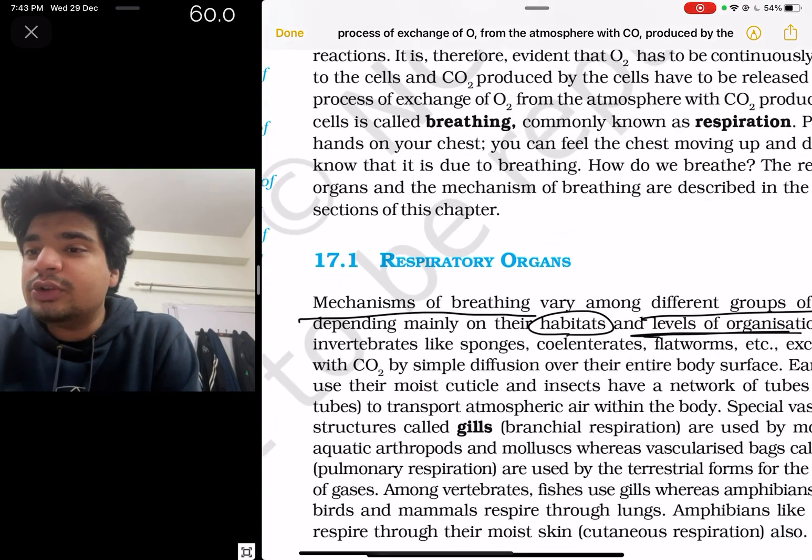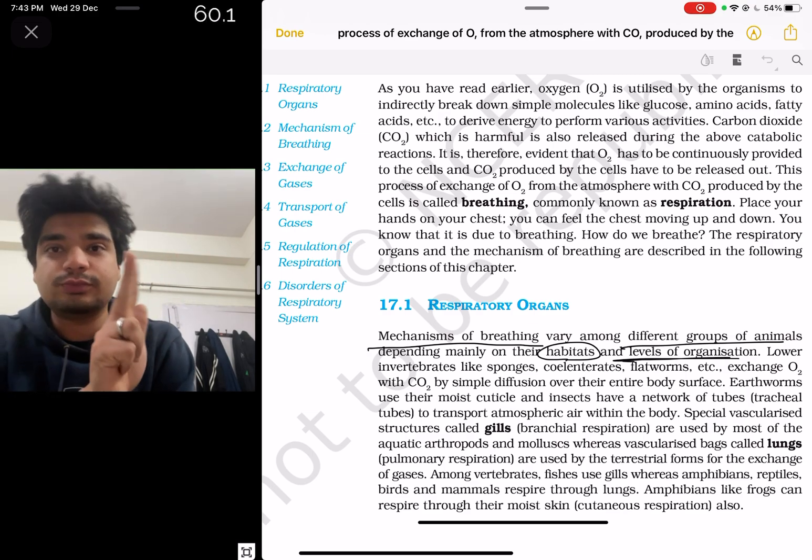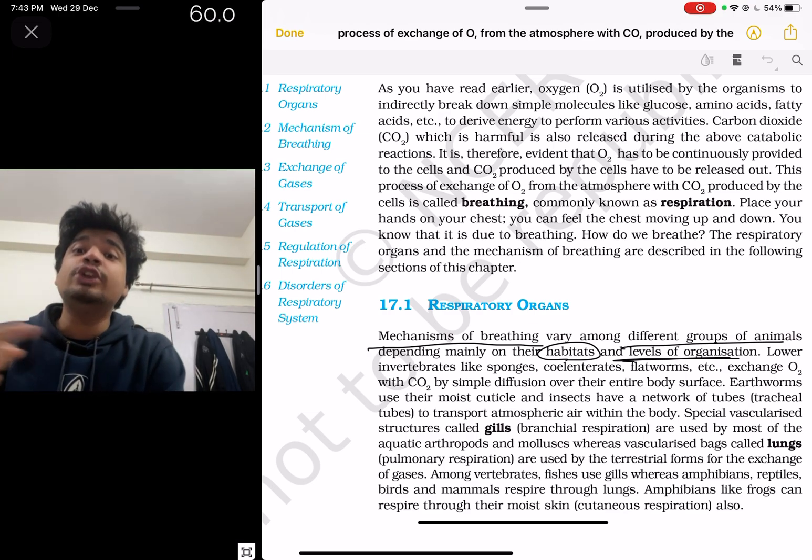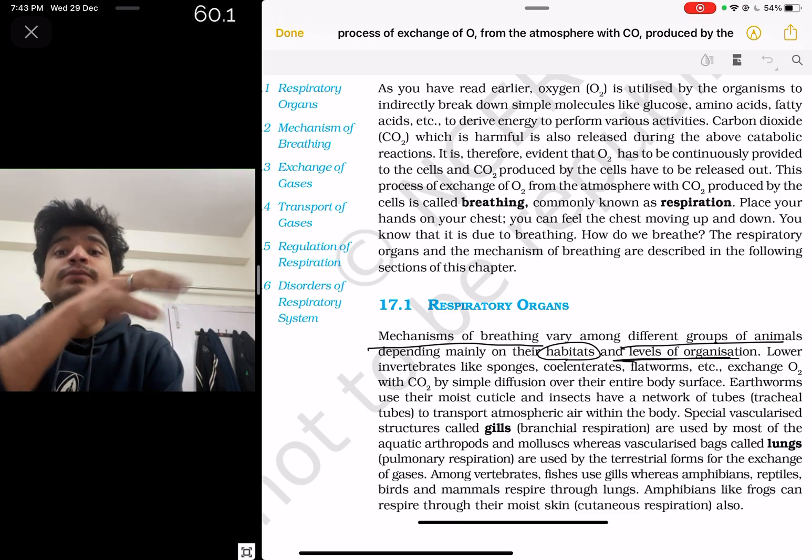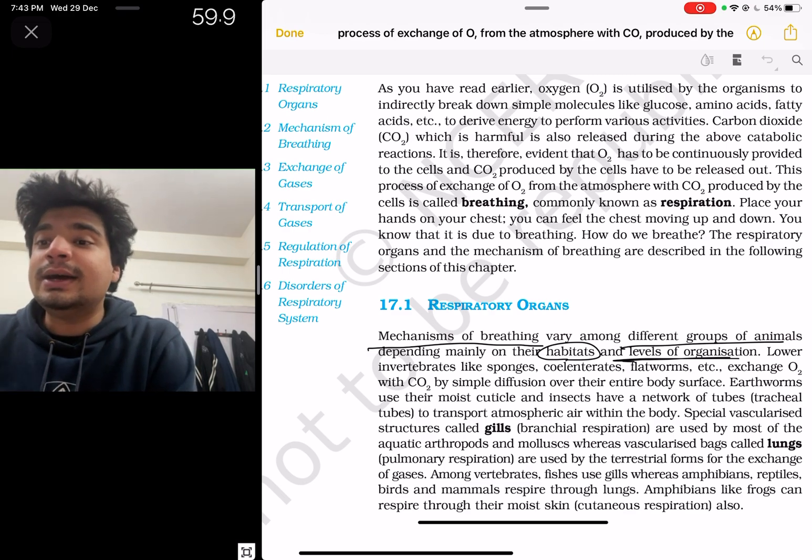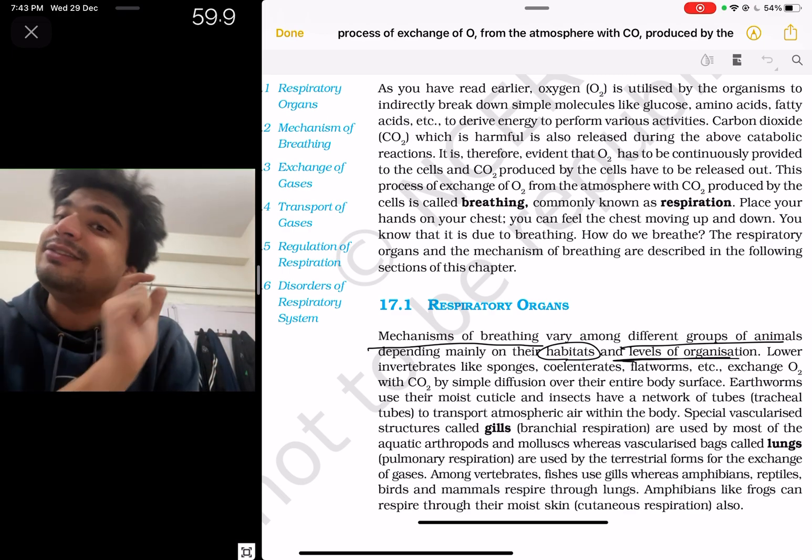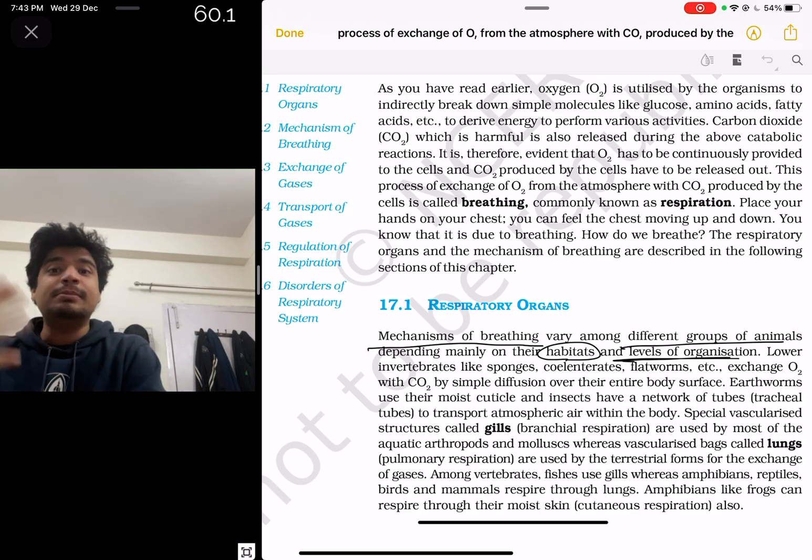So when it comes to the gills, it is called brachial respiration. And it is used by what? Aquatic arthropods and mollusks and fishes. We should remember this. So they can ask you which of the following do not use gills, and the answer could be insects. There are only aquatic arthropods which are using gills. They can give terrestrial insects. Terrestrial insects are using tracheal tubes. So this can be again a question.